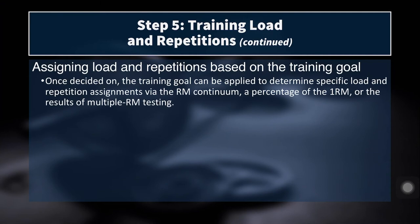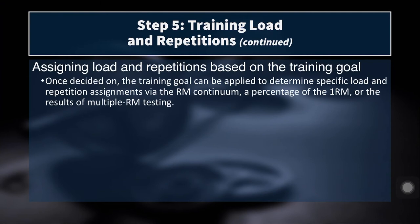Plenty of coaches do multiple rep max testing safely. If you are training for a specific goal like hypertrophy, it might be more effective to do something like a 10RM, because we know that higher reps — 8 to 12 — induce hypertrophy to a much greater extent than sets of 1 to 5. If your goal is strength, then you might do a 1RM or 3RM, because those are more specific to strength.